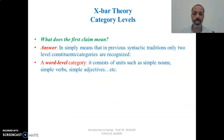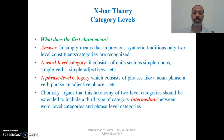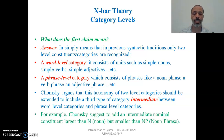What does the first claim mean? It simply means that in previous syntactic traditions, only two level categories are recognized: word level categories, consisting of simple nouns, verbs, adjectives, and so on, and phrase level categories, consisting of noun phrases, verb phrases, adjective phrases, and so on. Chomsky argues that this taxonomy should be extended to include a third type — an intermediate category between word level and phrase level. For example, Chomsky suggests adding an intermediate nominal constituent larger than N and smaller than NP.